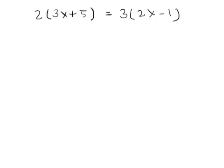So when I try to distribute 2 with 3x plus 5, it becomes 2 times 3x which is 6x plus 2 times 5 which is 10, equals 3 times 2x which is 6x minus 3 times 1 which is 3.